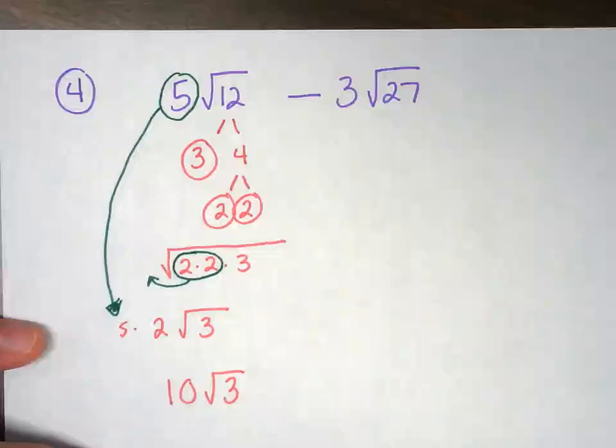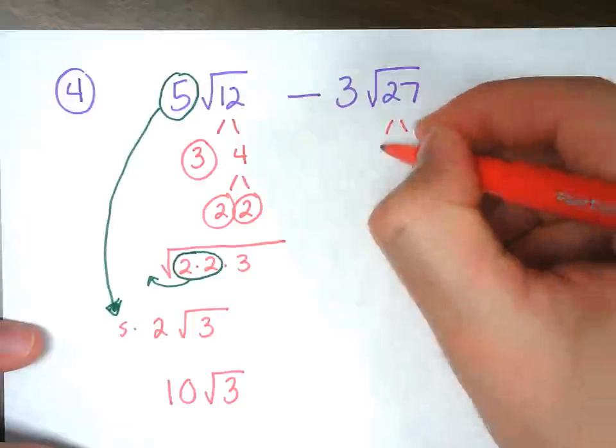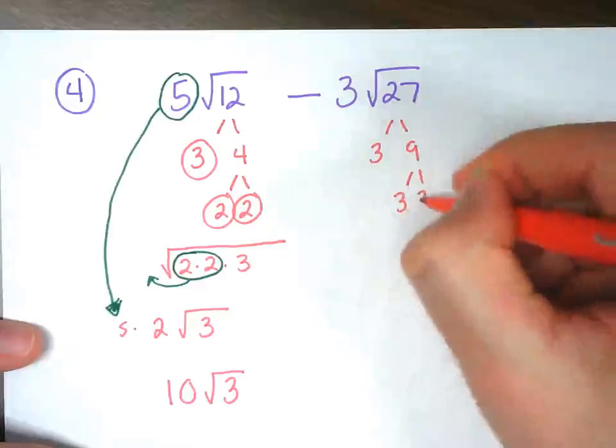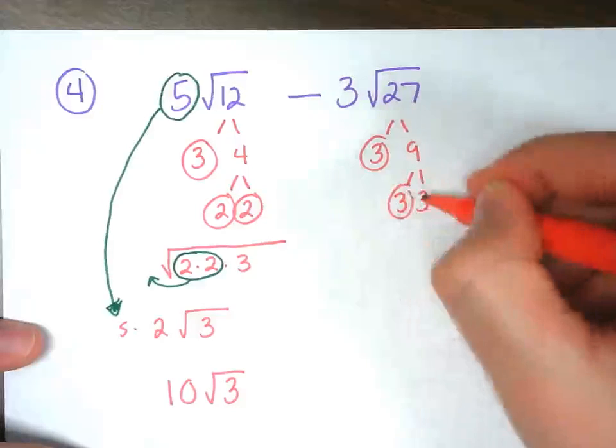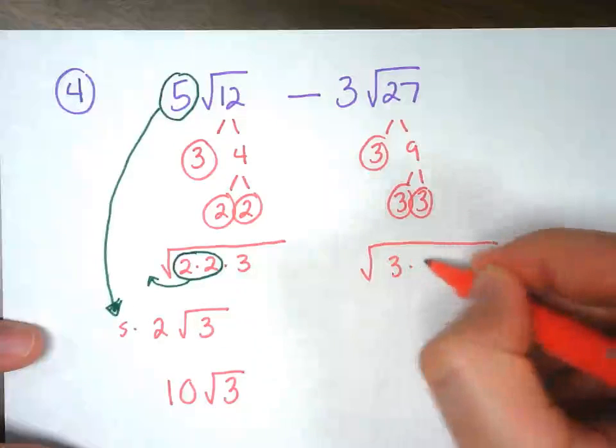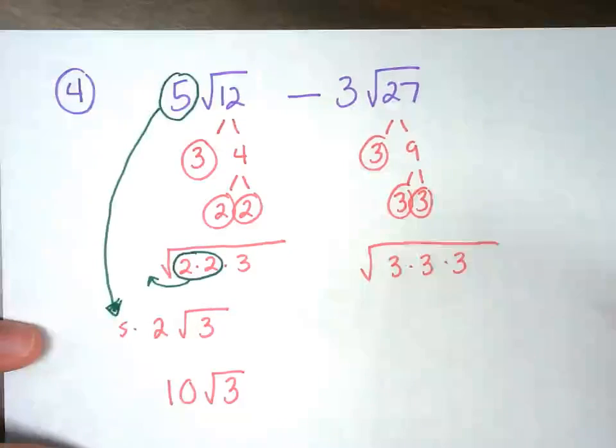Now let's do √27. So that'd be 3 times 9, and then 9 is 3 times 3. Circle our prime numbers. Put it inside the radical 3 times 3 times 3.